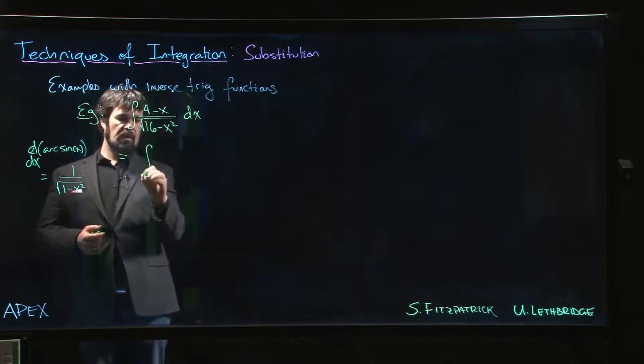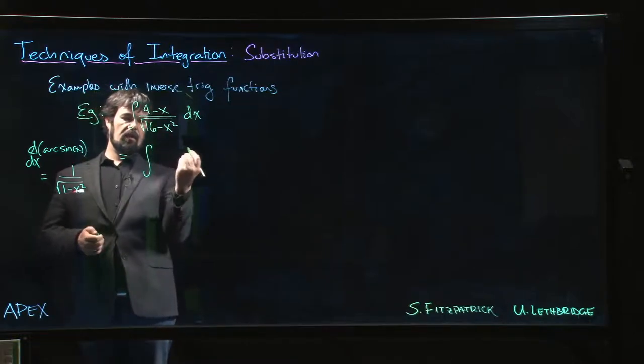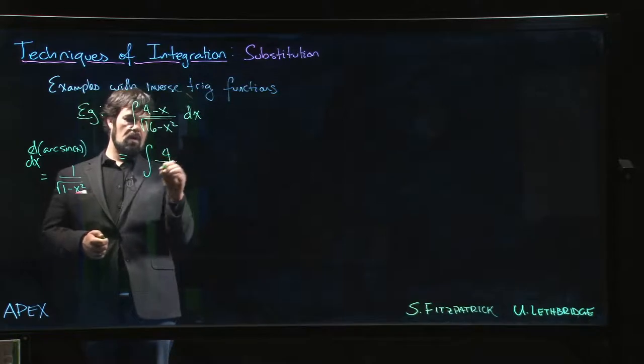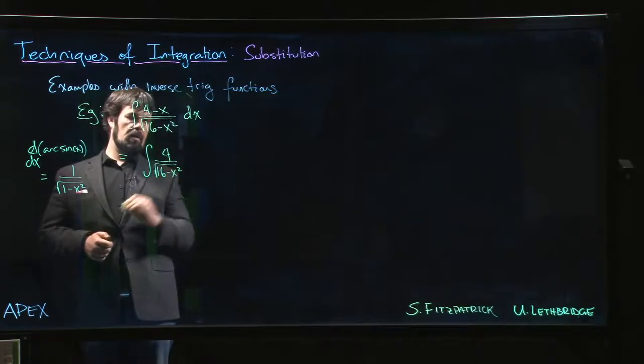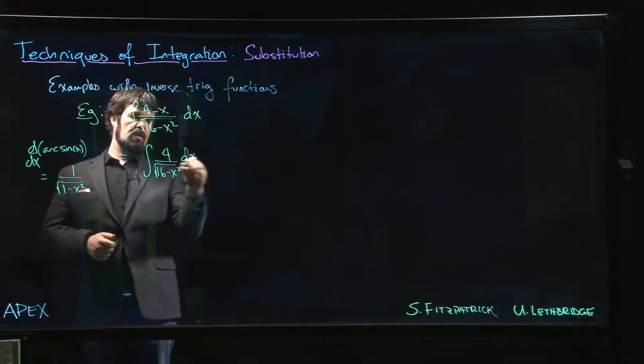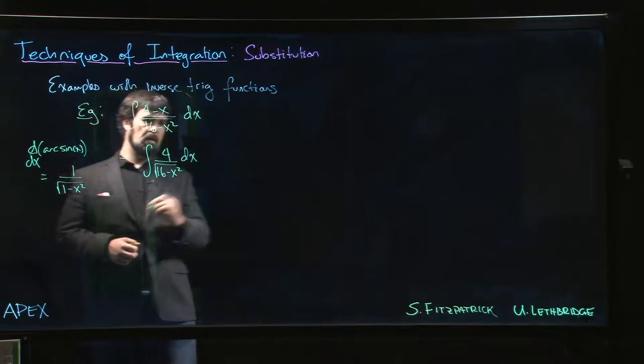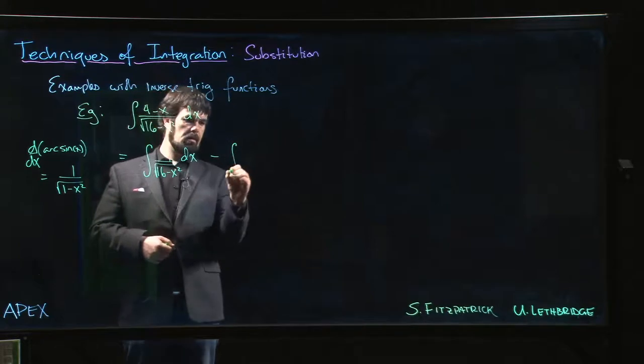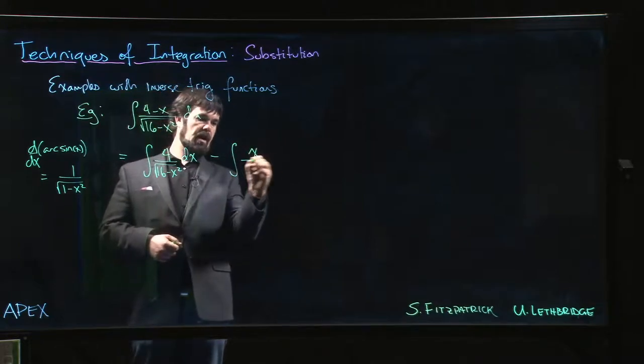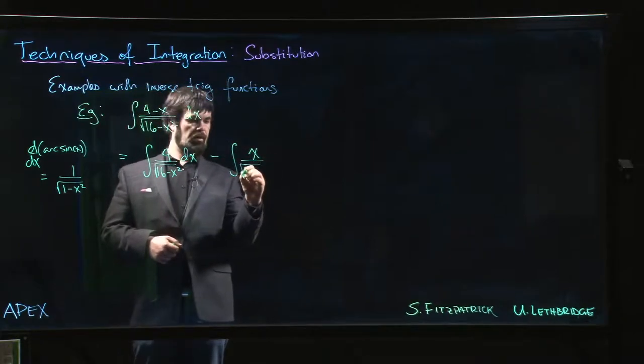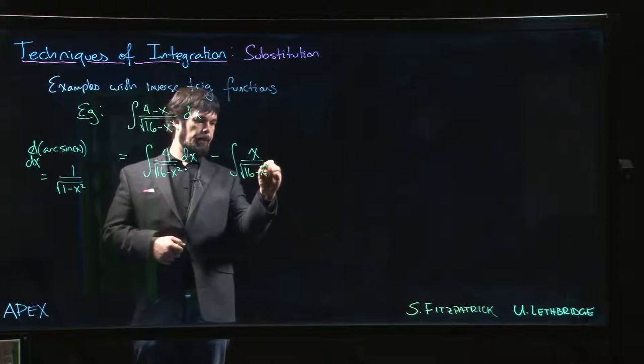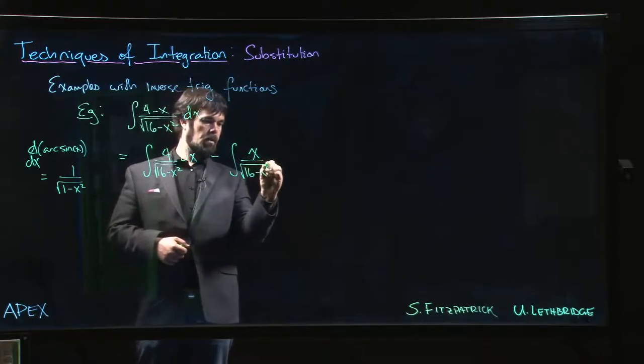So we can write this as the integral of 4 over the square root of 16 minus x squared times dx, minus the integral of x over the square root of 16 minus x squared times dx.